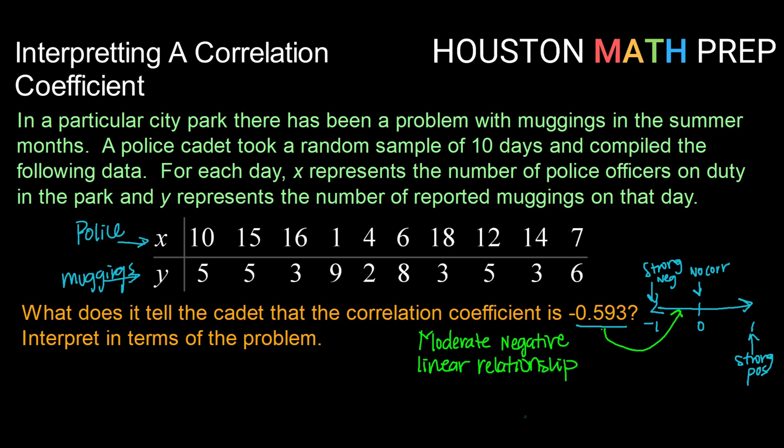Okay, so what does that mean in the context of the problem? Well, we know that a negative linear relationship, if we think about a scatter plot, means that as x increases, y decreases.